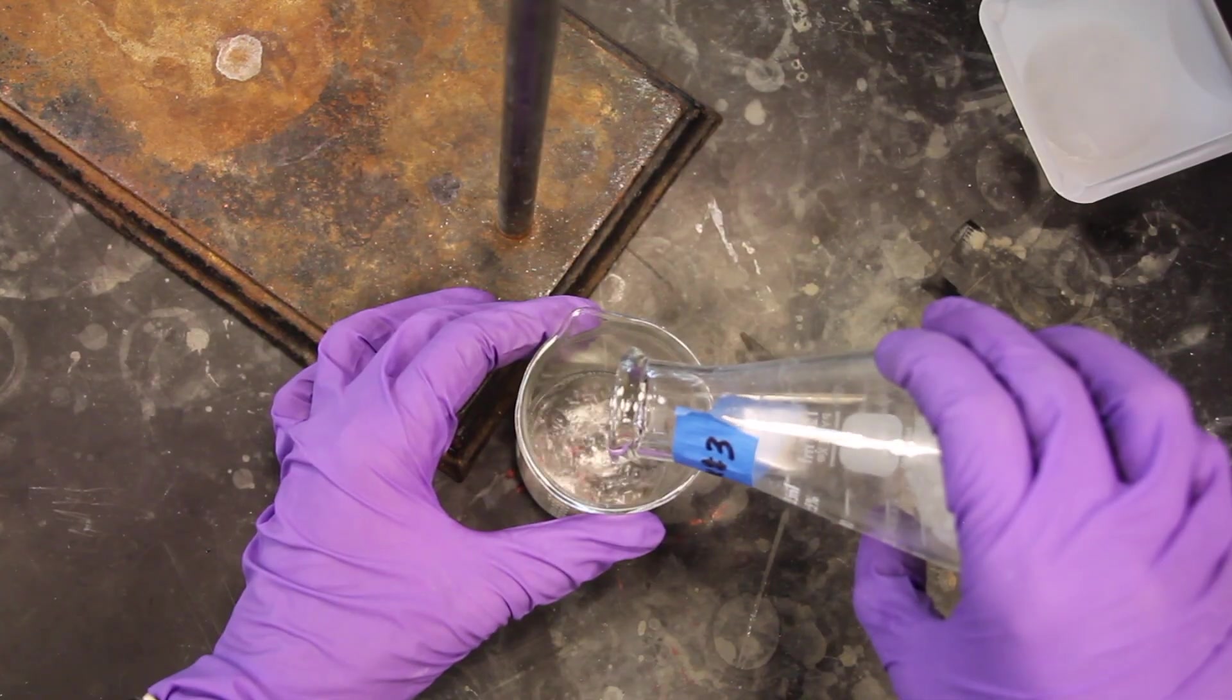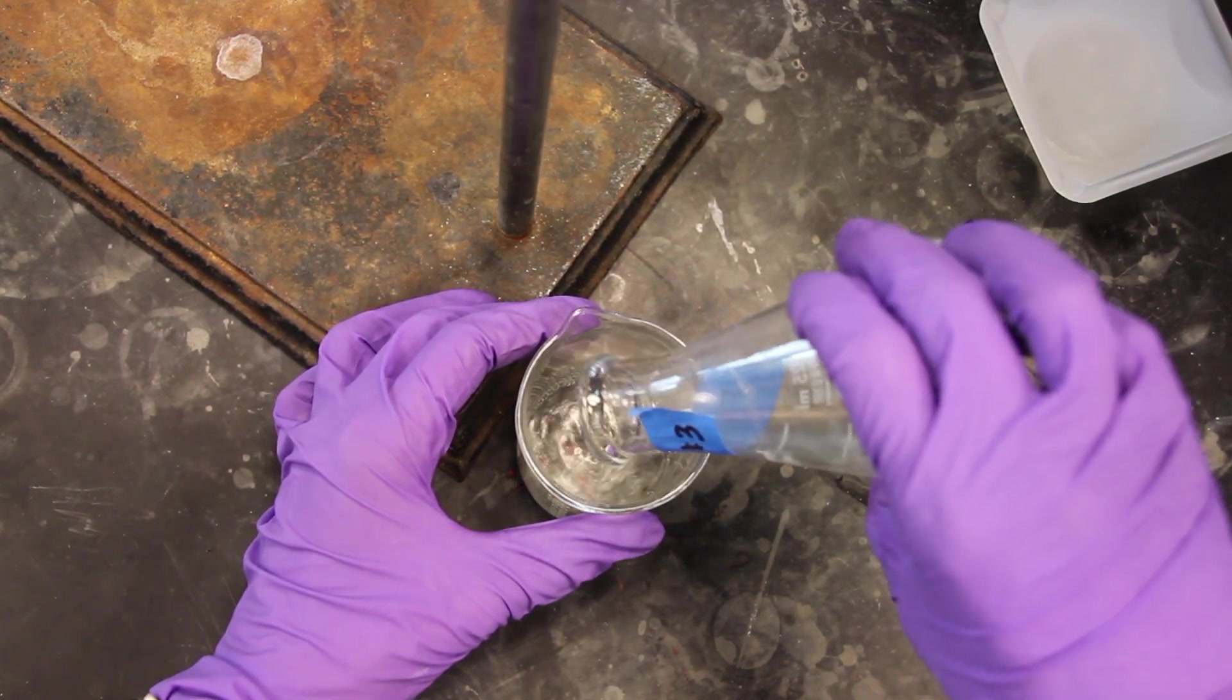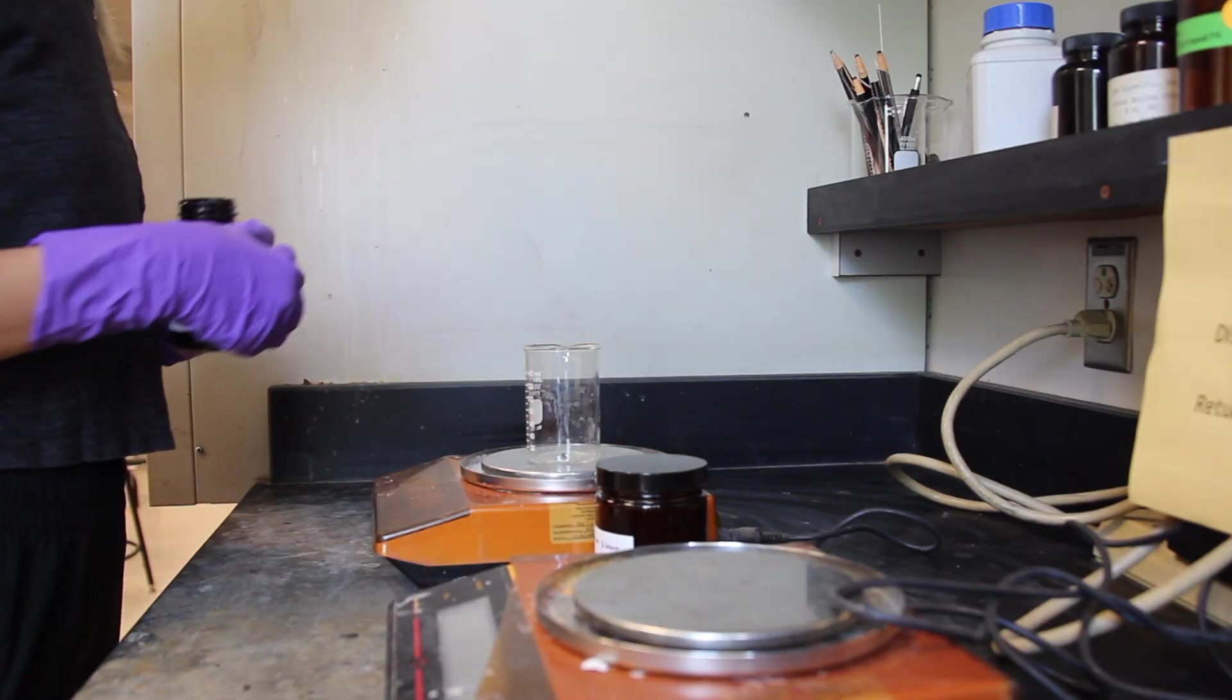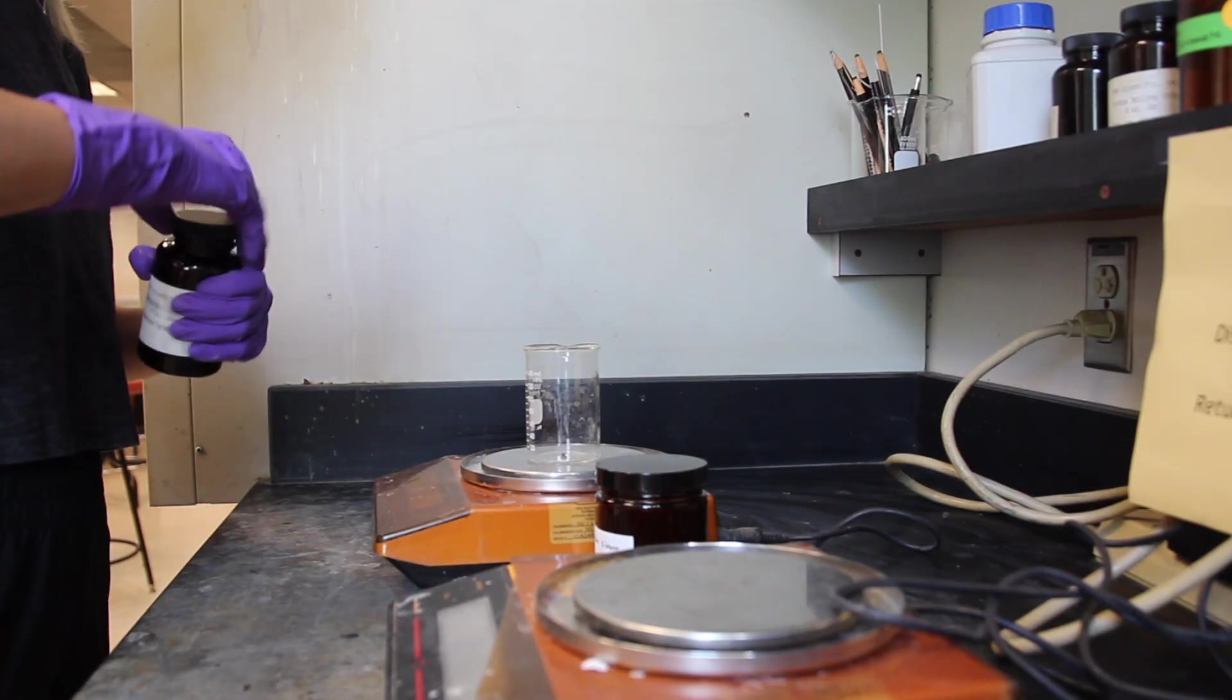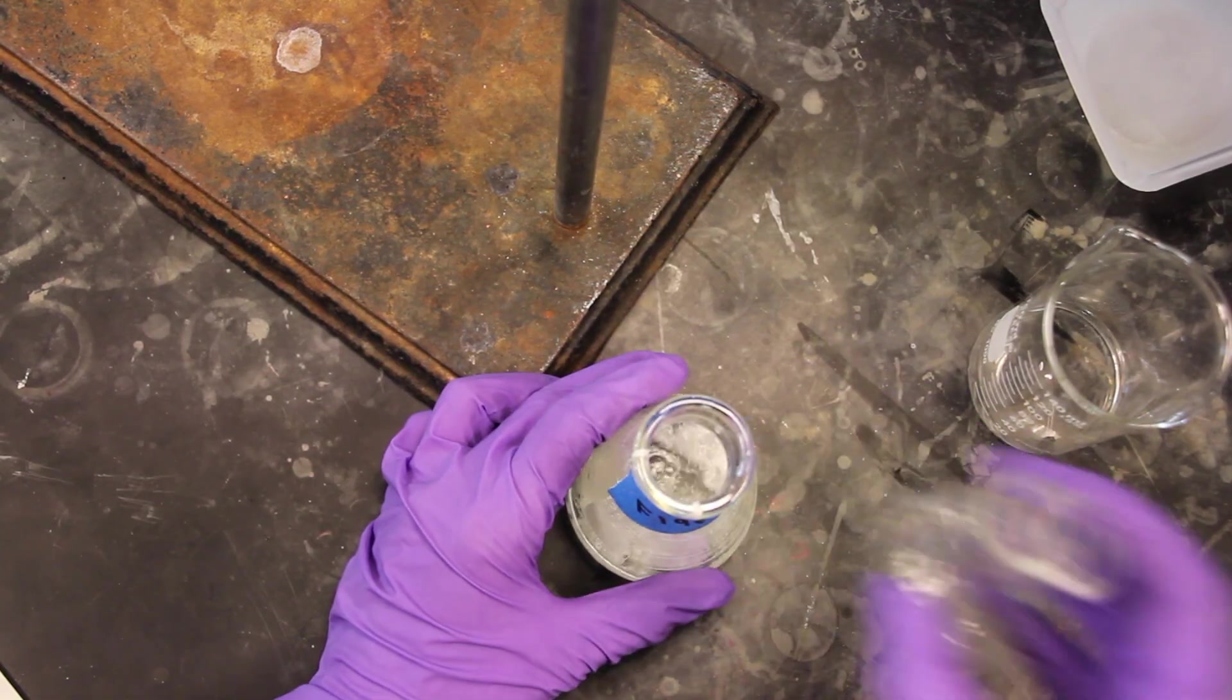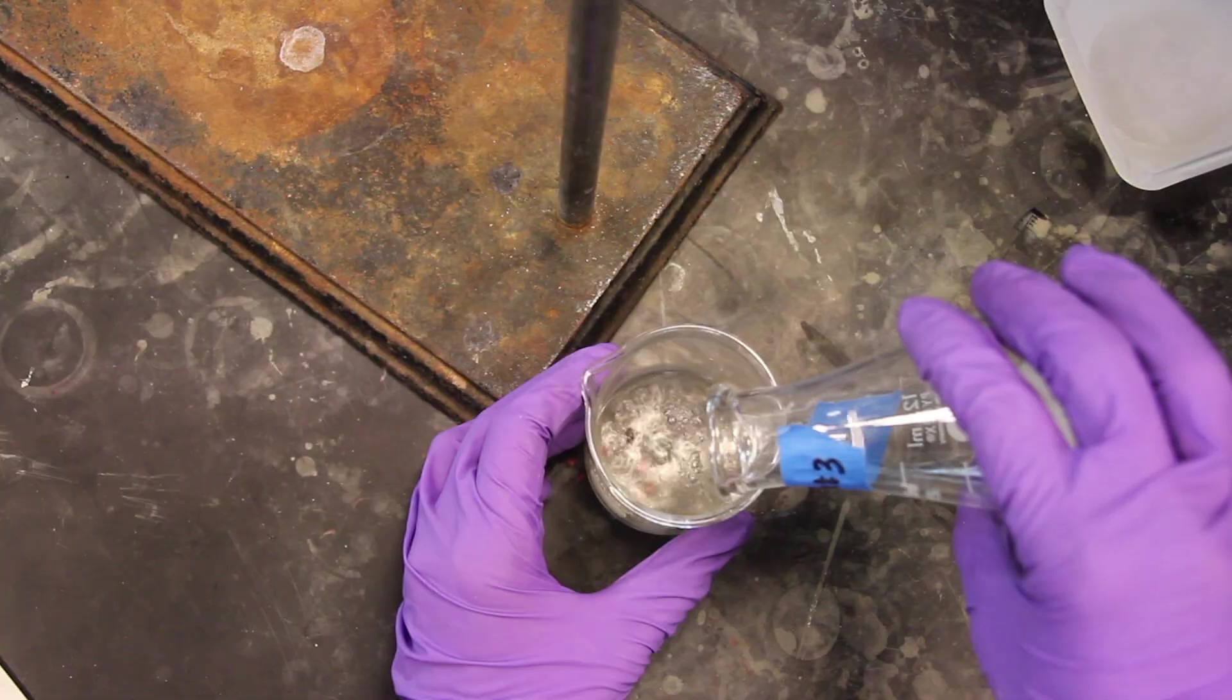Decant the ether from flask 3 away from the sodium sulfate into a tarred flask that contains a boiling chip. This means that you should note the weight of the flask containing the boiling chip so that you can subtract this weight later and find the mass of the neutral solid. Take care to leave all of the drying agent behind. Wash the drying agent with additional ether to ensure a complete transfer of the product into your tarred flask.